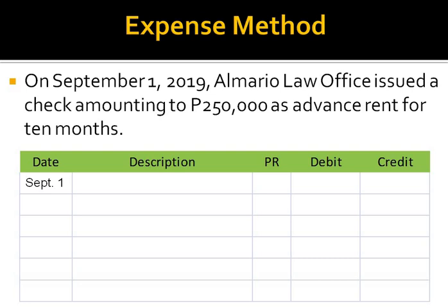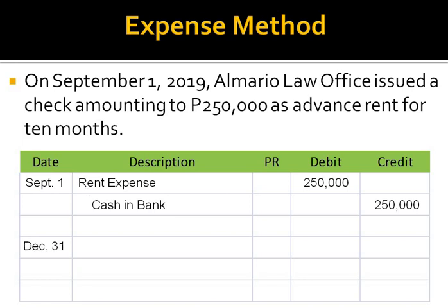Because the transaction states that the company issued a check, the accountant must have credited cash in bank for P250,000. And since we assume he used the expense method, he must have debited the expense account rent expense for the same amount of P250,000. Now, for our adjusting entry, because the accountant debited rent expense here, we have to credit this account on December 31, 2019. So the accountant debited rent expense here; for our adjustment, we credit that, and then debit the opposite account title of rent expense, which is the asset prepaid rent.